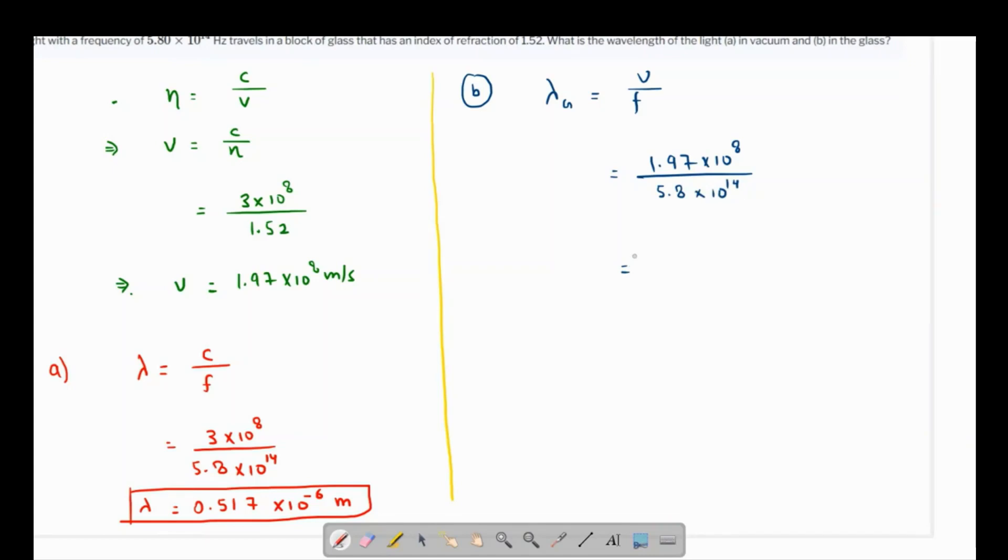So just grab my calculator once again. We have 1.97 over 5.8, which is 0.340 times 10^-6 meters. So this is the required wavelength in the medium of glass.